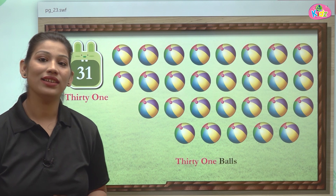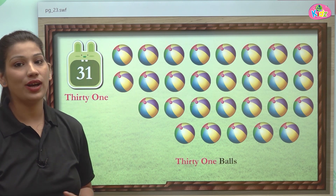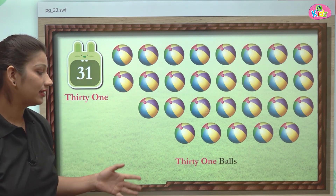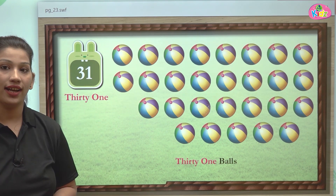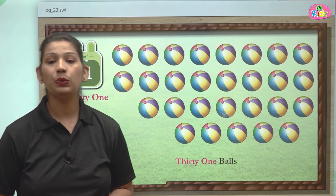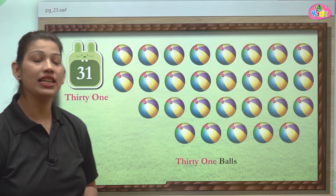After THIRTY, we add ONE: O-N-E. That makes 31. T-H-I-R-T-Y, O-N-E — 31.